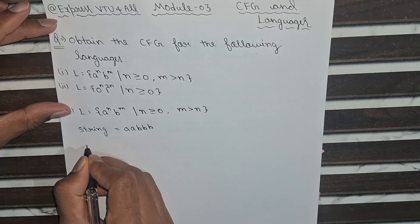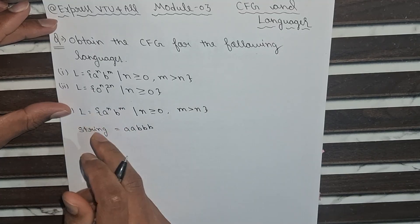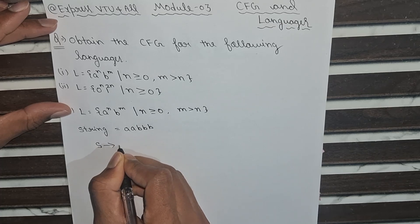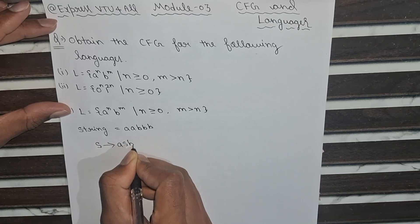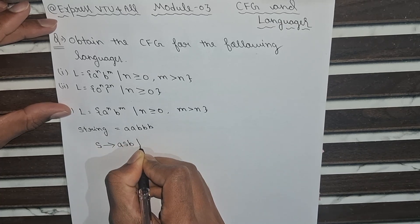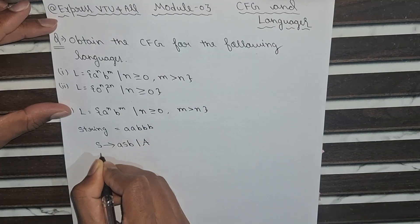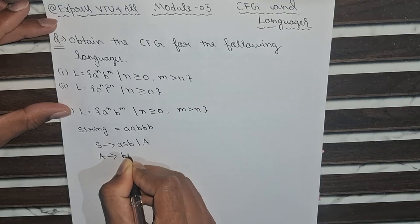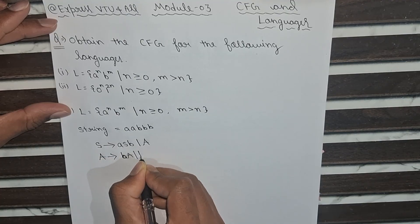So how will we write this language in CFG form? We will take S as a starting point and then aSb. And we will take one more here, A. Now we call A as Ab, and A to b.